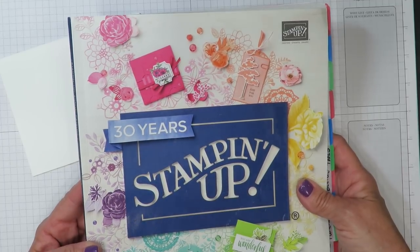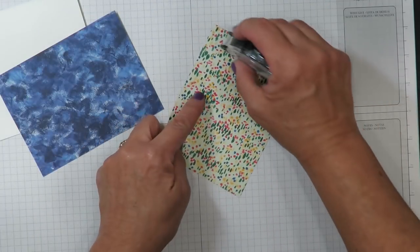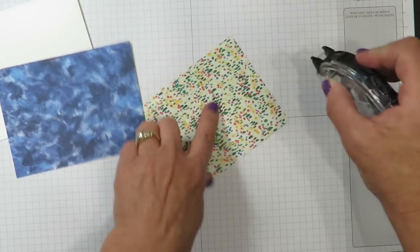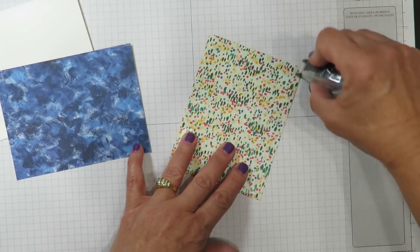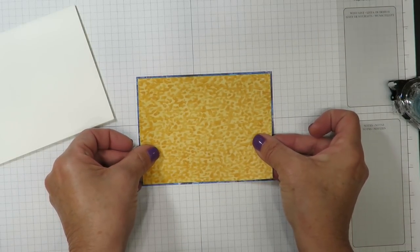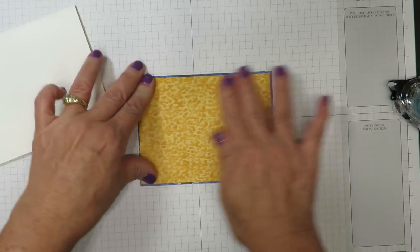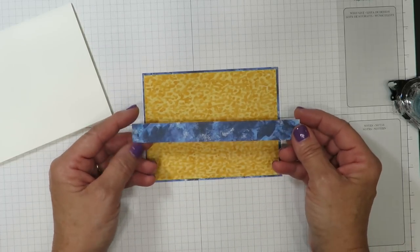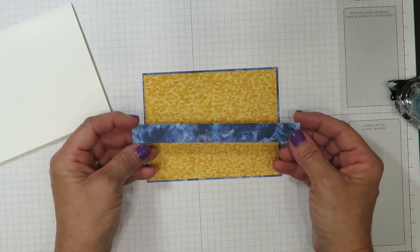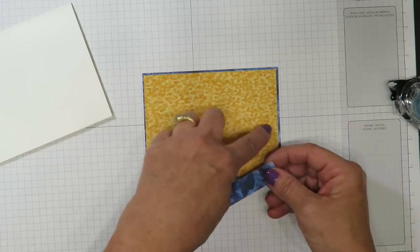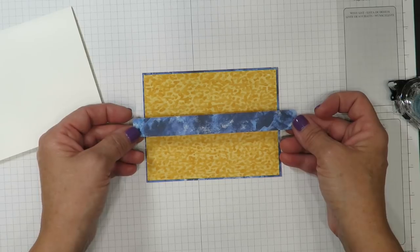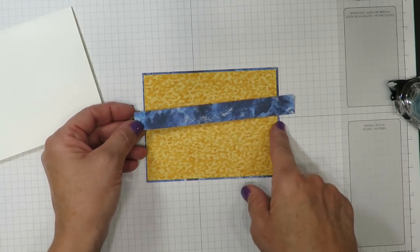I'm going to place adhesive on the back of the one that has the crushed curry colored accents on it. I've created these to have a very small margin of color all the way around, so it's going to leave a slight border of the blue. I've also cut about a five-eighths inch piece of designer series paper that I'm going to adhere across the center of these layers.